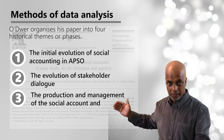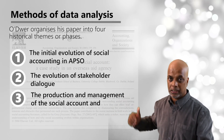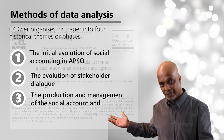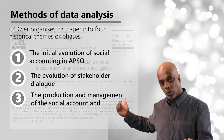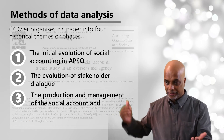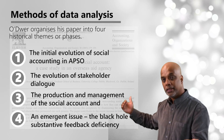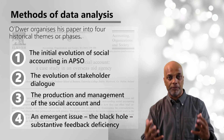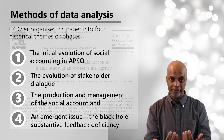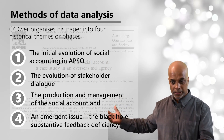Thirdly, he talks about a third phase or stage of the evolution of the social accounting process — the production and management of the social account. So that is a particular statement they are producing, and he explains how it has been produced and managed, using various data available to him. And then finally, he talks about how this particular evolution emerged into a stage where there is a substantive feedback deficiency — a kind of a black hole — where unfortunately the whole social accounting process evolved into a deficient scenario. So he provides a critique of the manner in which the social accounting process evolved in this particular organisation.